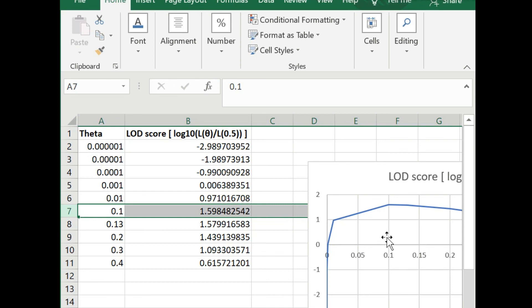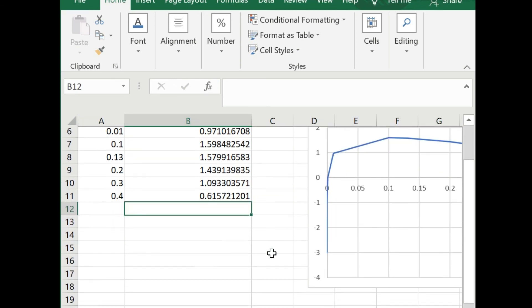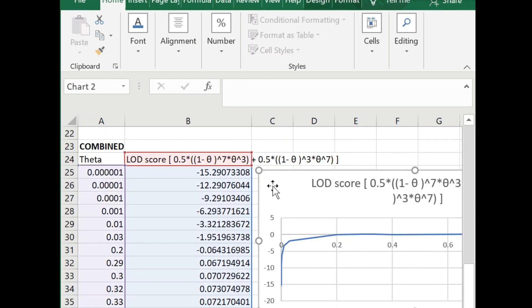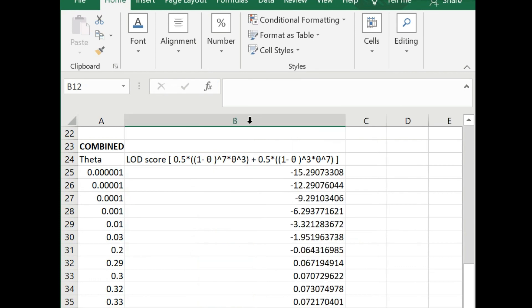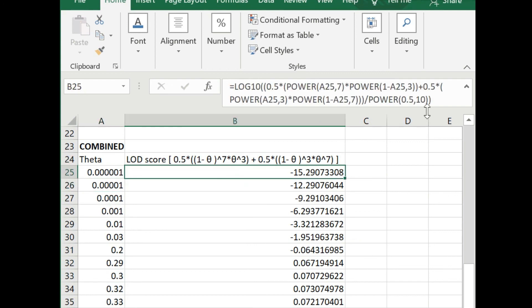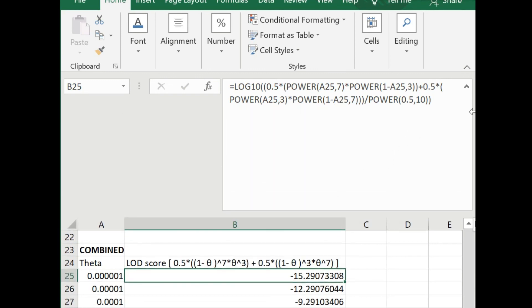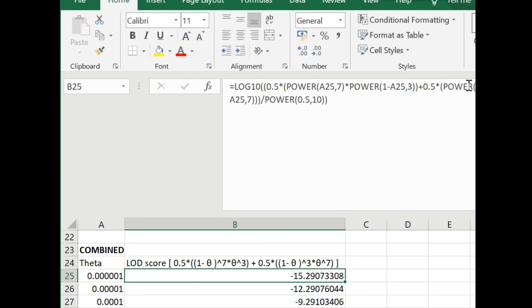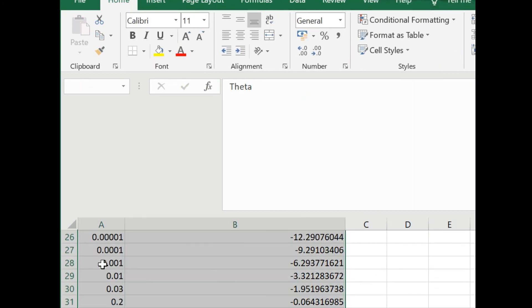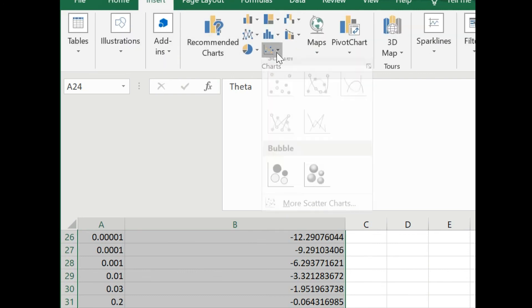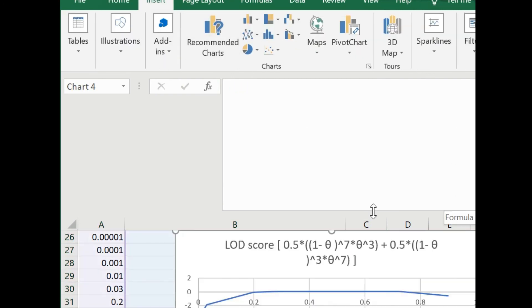In the case of our Excel file, we will be able to make a similar plot that we did last time. Here you can see that I have taken the case of theta from 10 raised to power minus 6 to 0.9, and I have observed the maximum at 0.32, where at theta equal to 0.32, the LOD was 0.073.